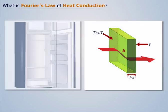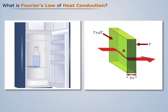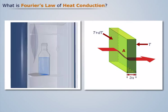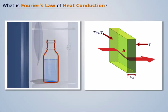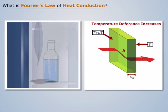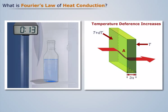Now, if we place the bottle in the fridge, we see that the temperature of the outer surface of the bottle wall decreases. As a result, the temperature difference between the inner and outer wall of the bottle increases. We also see that the water takes less time to cool down than before. Thus, we can say that the rate of heat transfer through the wall has increased.